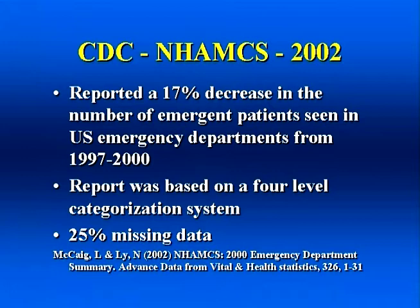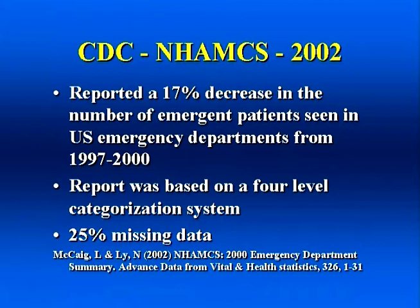This data is reported yearly to describe the state of emergency departments. In a report published by the CDC in 2002, the CDC reported an alarming 17% decrease in the number of patients with emergent complaints seen from 1997 to 2000. This surprised many emergency clinician leaders — none of us probably felt that decrease in acuity. The report was limited by the quality of data that was abstracted. The CDC uses a four-level triage system, while most emergency departments use a three-level triage system. The problem the CDC faces when attempting to describe emergency care is the lack of a standardized triage system in the United States.